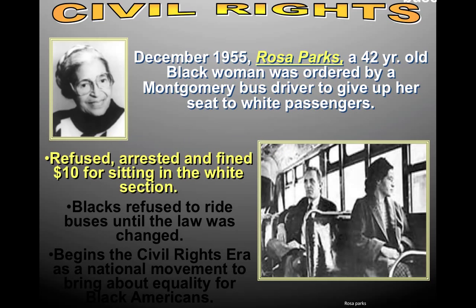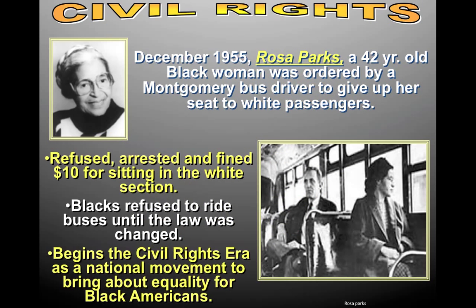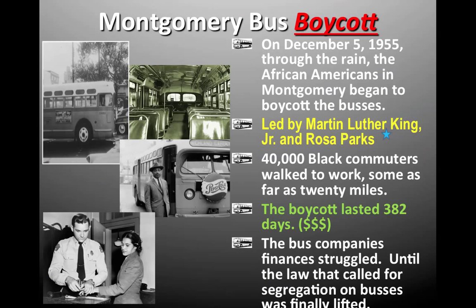Of course you know who this is — Mrs. Rosa Parks. In December 1955, Rosa Parks is on her way home. She refuses to sit at the back of the bus and sits in the front. She's arrested and fined $10 for sitting in the white section. She basically starts a firestorm in Montgomery, Alabama. She is challenging separate but equal — Plessy versus Ferguson. A lot of people think she was just tired and was a poor seamstress, but no — she was doing it on purpose because she was told to by Martin Luther King Jr. and other leaders.